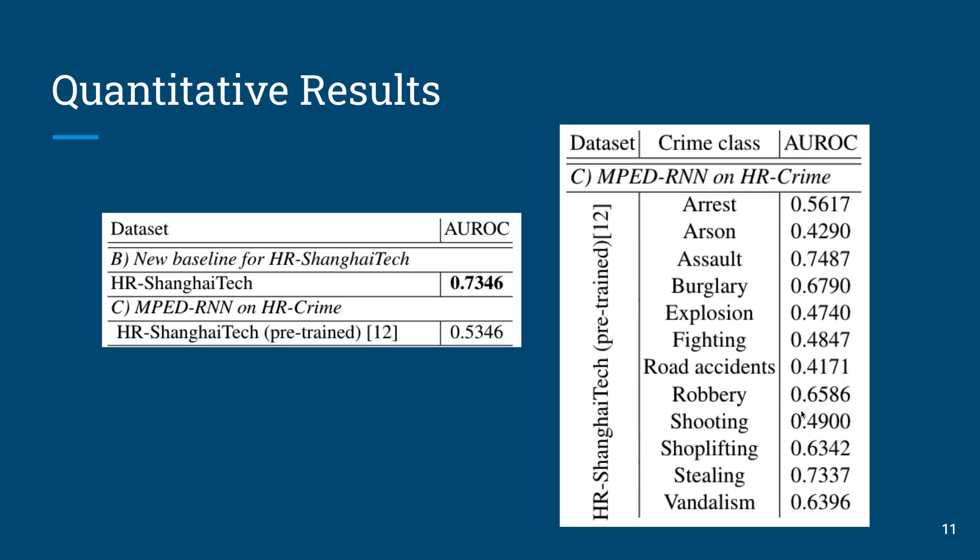Next, to establish the HR-Crime baseline, we first tested the pre-trained MPAD-RNN on the HR-Crime test set without explicitly fine-tuning the model to the new domain. These results indicate that the pre-trained MPAD-RNN model can make promising predictions even on an unseen domain if the human subjects are reasonably present in committing the anomalies. For this experiment, we also provide results in a class-wise manner.